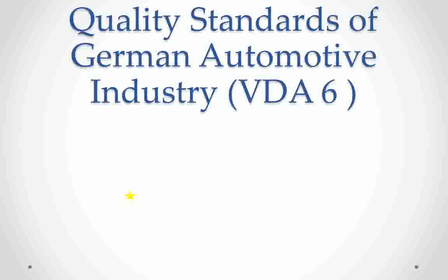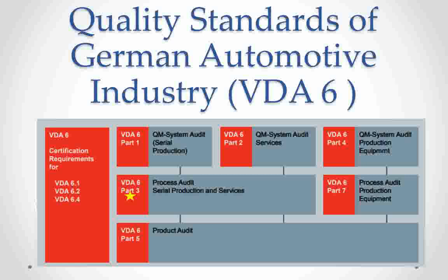Now let's understand the VDA 6 family of documents. This block shows different documents for carrying out different types of audits: system audit, process audit, and product audit. The system audit objective is to verify the overall effectiveness of the management system. The process audit objective is to verify the effectiveness of the product realization process. The product audit objective is to verify product conformance to defined specifications throughout the manufacturing and dispatch process.